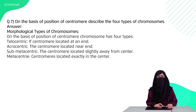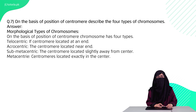Question 7 is: on the basis of the position of the centromere, describe the four types of chromosomes. First, we have telocentric, where the centromere is at the end. Second, acrocentric, where it is near the end. Third, sub-metacentric, where it is slightly away from the center. And fourth, metacentric, where the centromere is at the center.